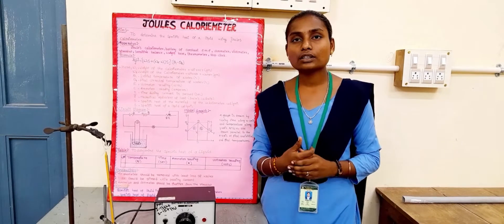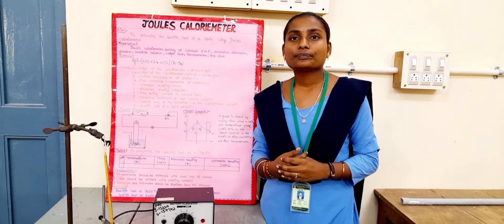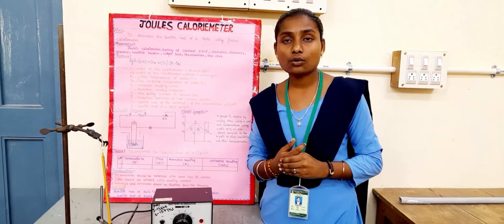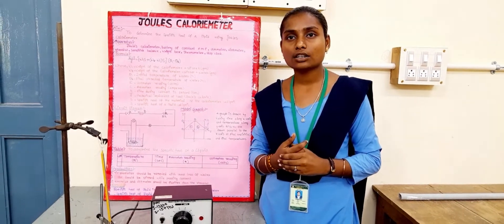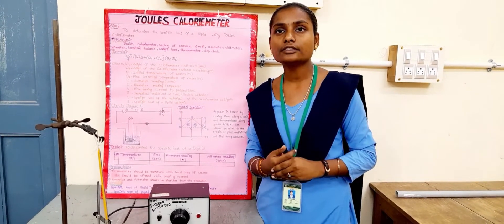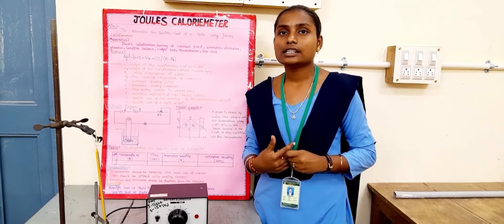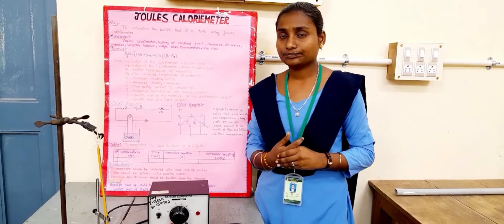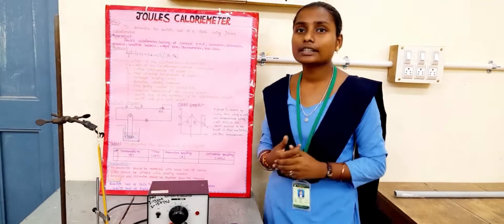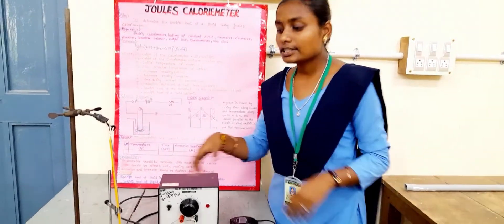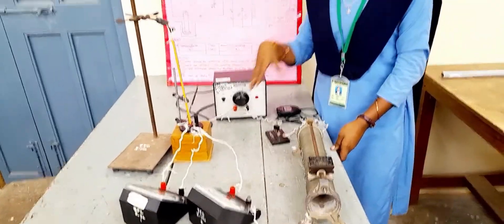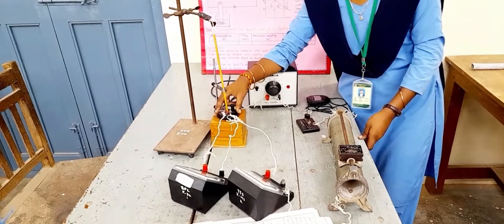First of all, we know what is specific heat. The amount of heat required to raise the temperature of 1 unit mass of liquid by increasing 1 Kelvin. It is called specific heat of liquid. Using Joules calorimeter, which cannot emit any heat or absorb any heat from the surroundings.